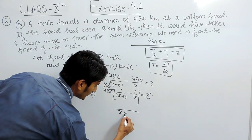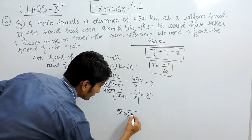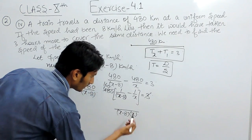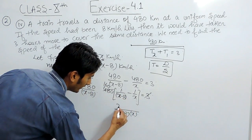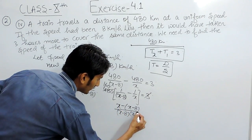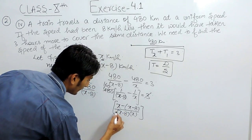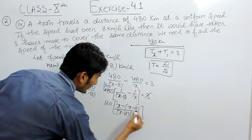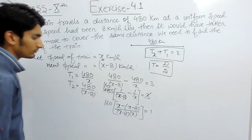So x multiplied by 1 is x, this multiplied by this should be x minus 8, and this is multiplied with 160, and this equals 1.